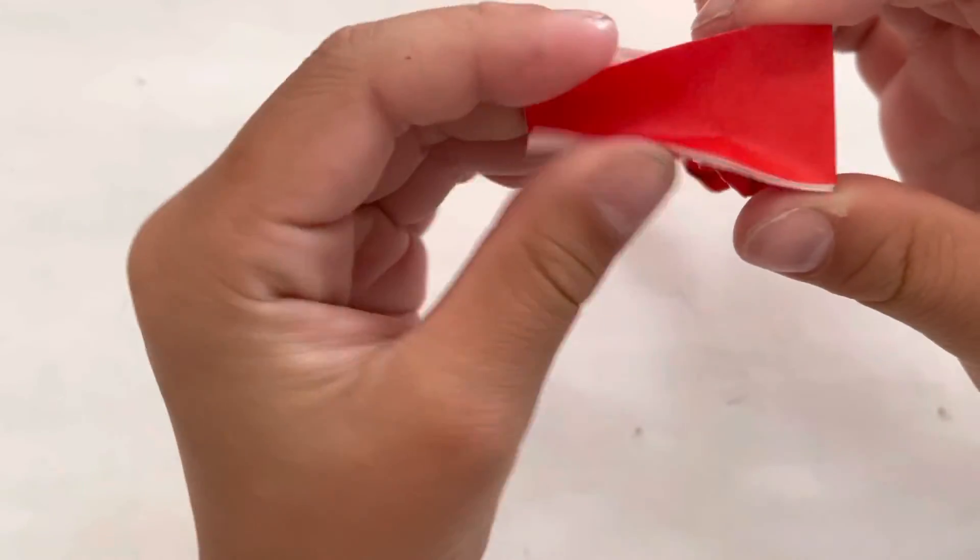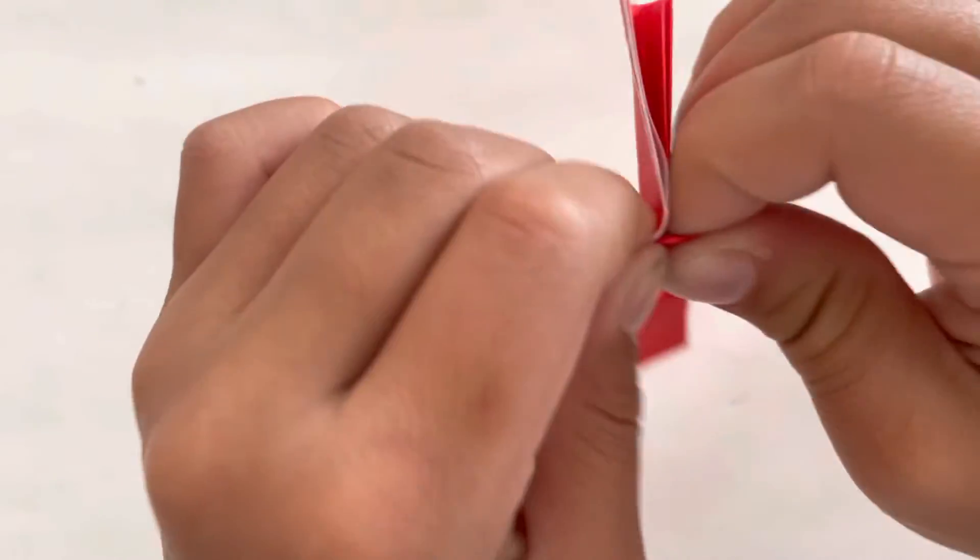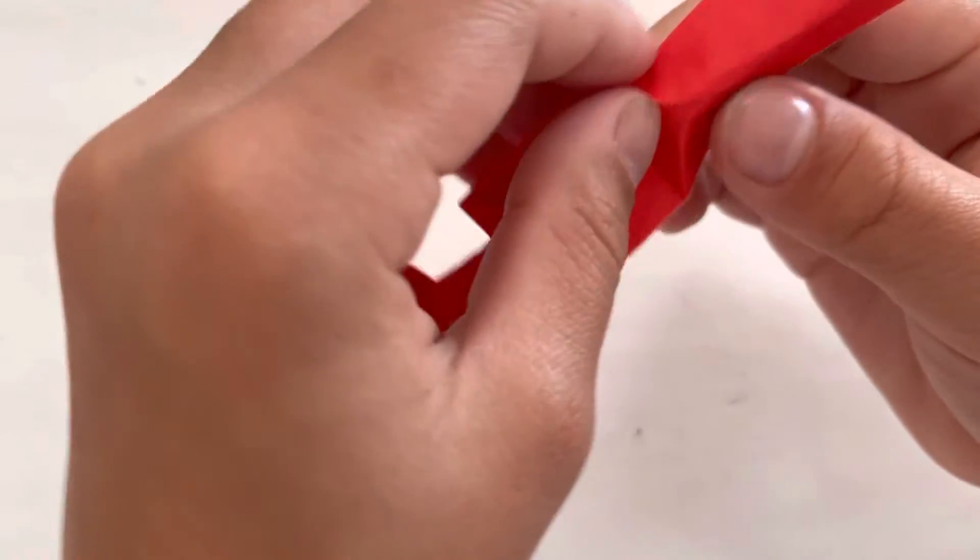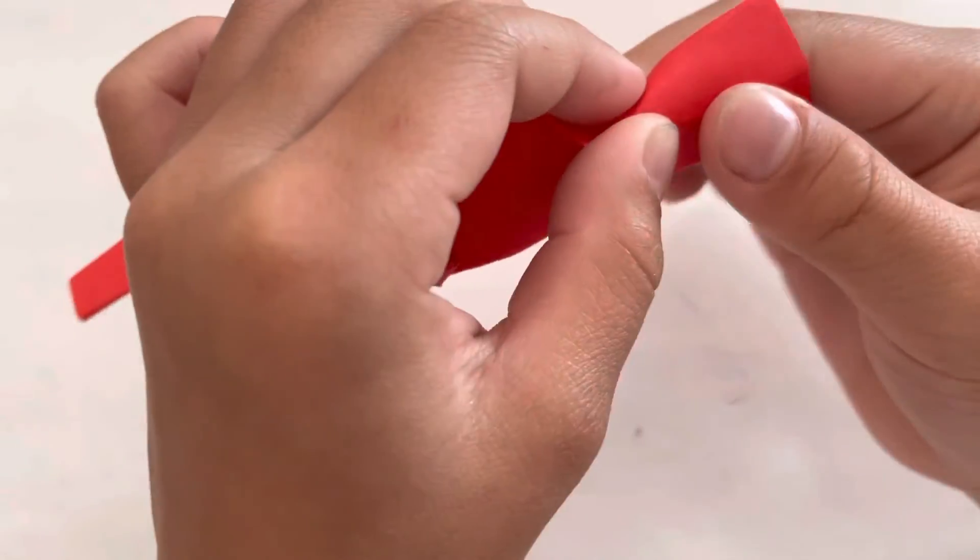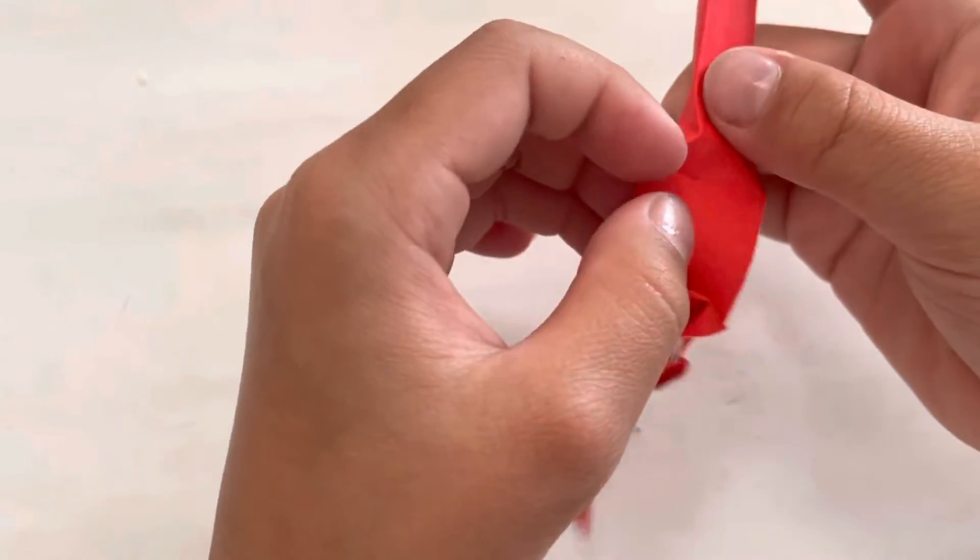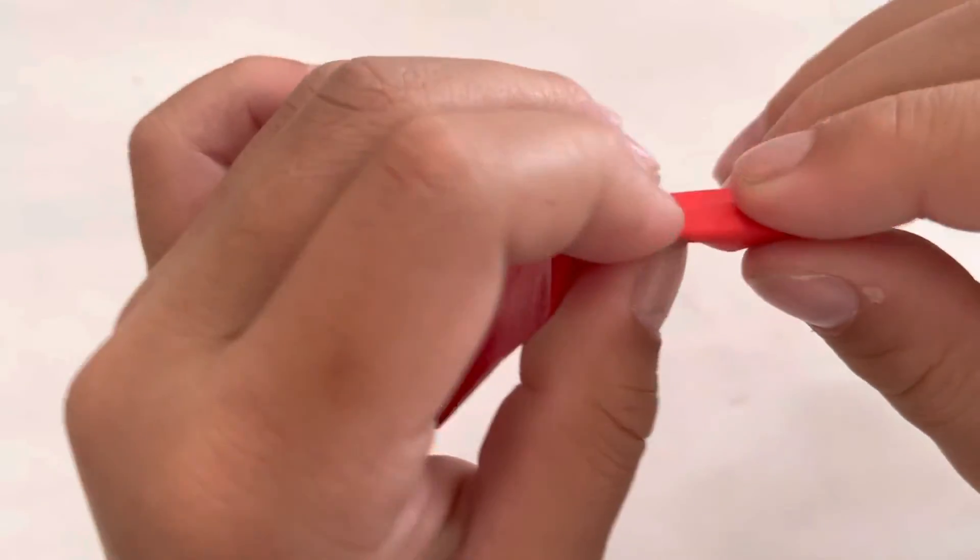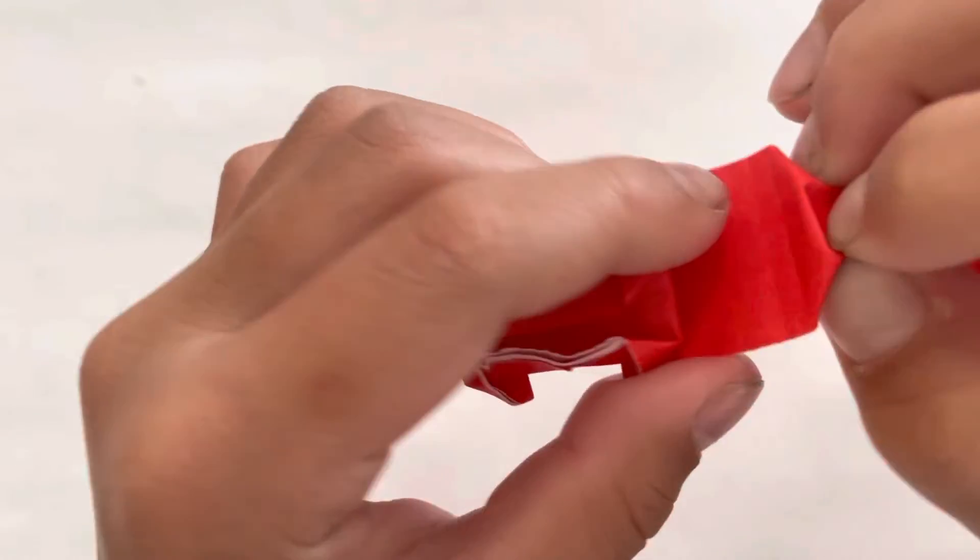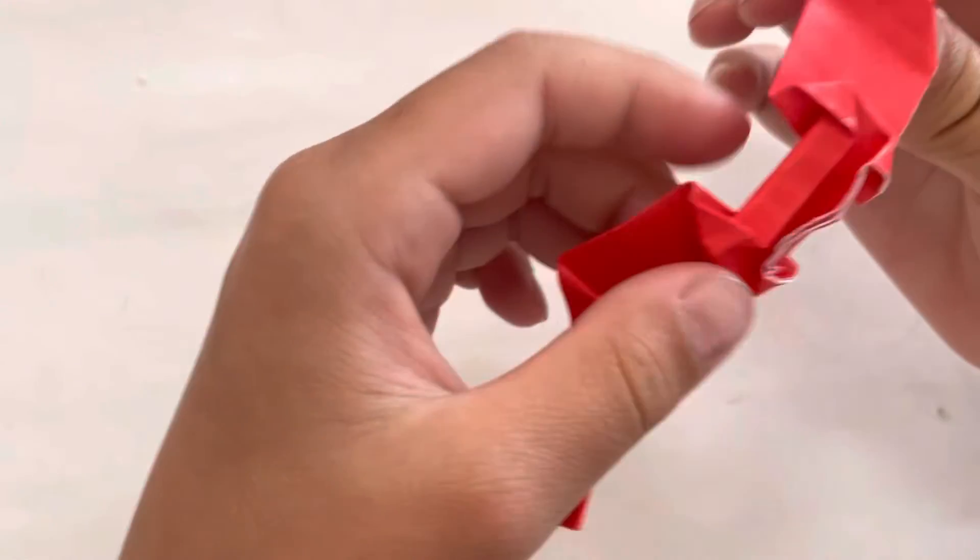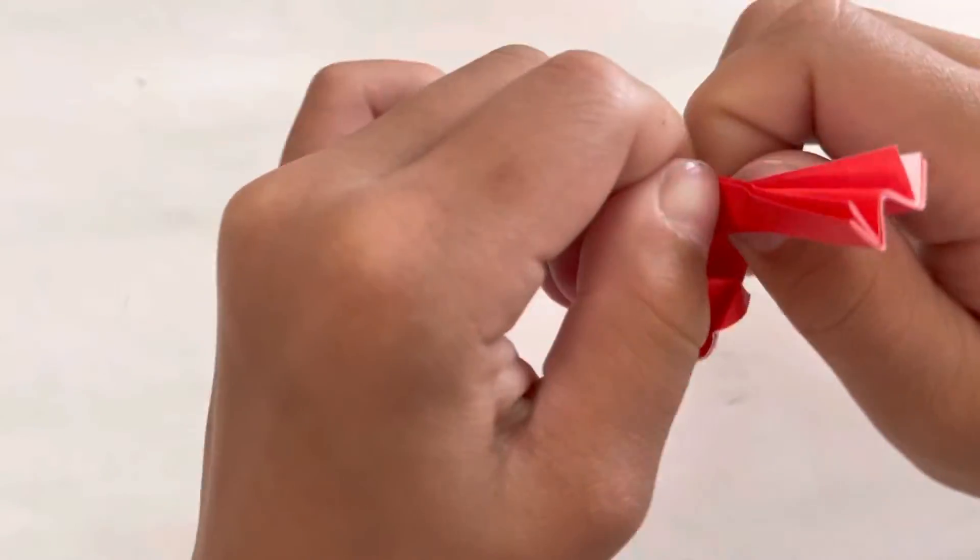So you rabbit ear this way. And then you open this up slightly and you want to, you want to sink this in. You want to sink fold. Like this. And close it up. And fold it here. So that's one.